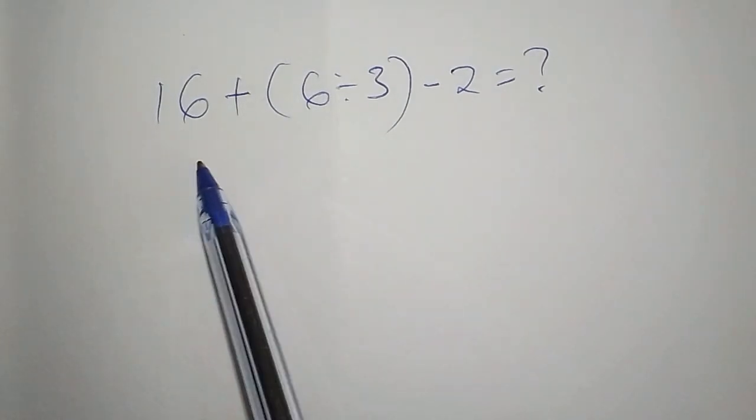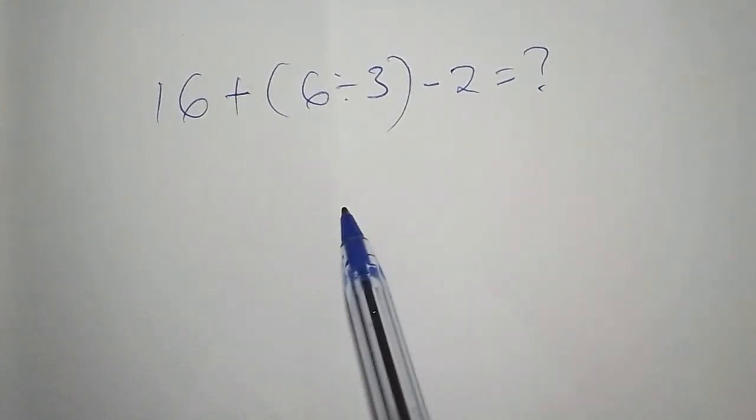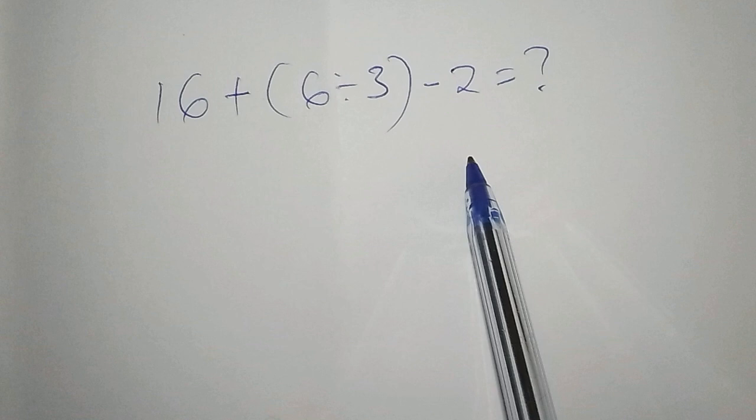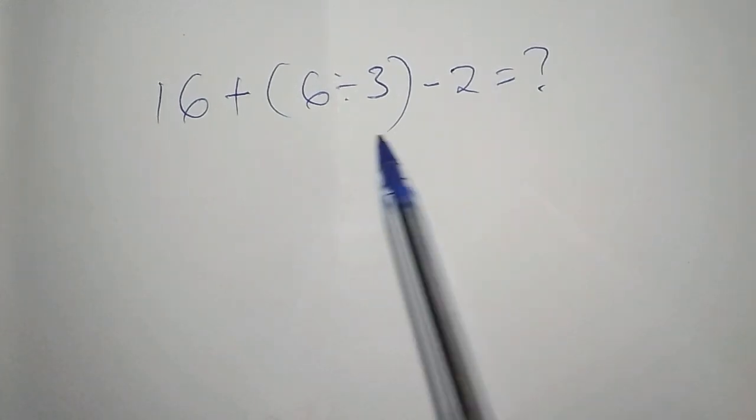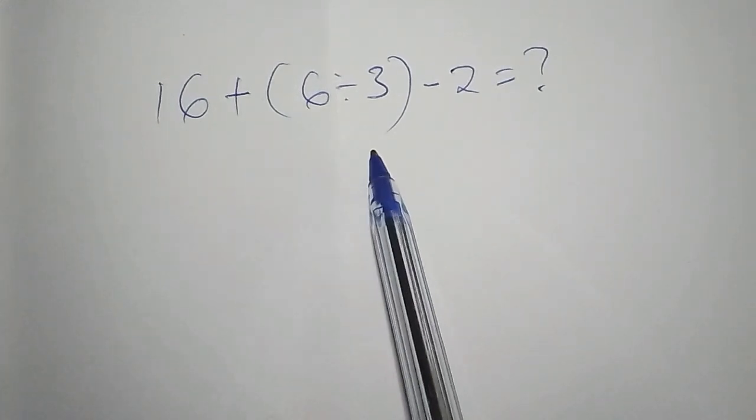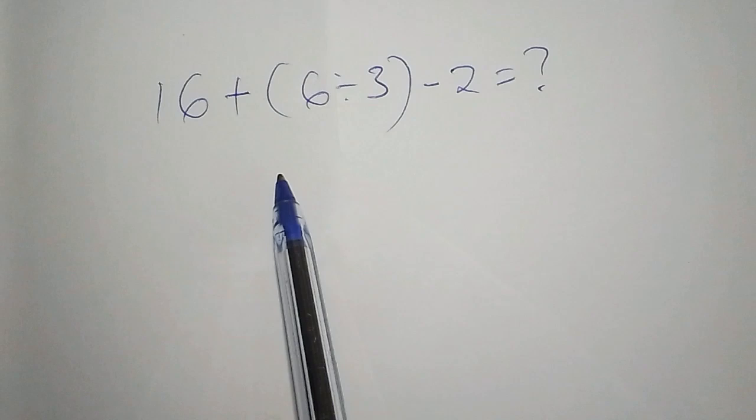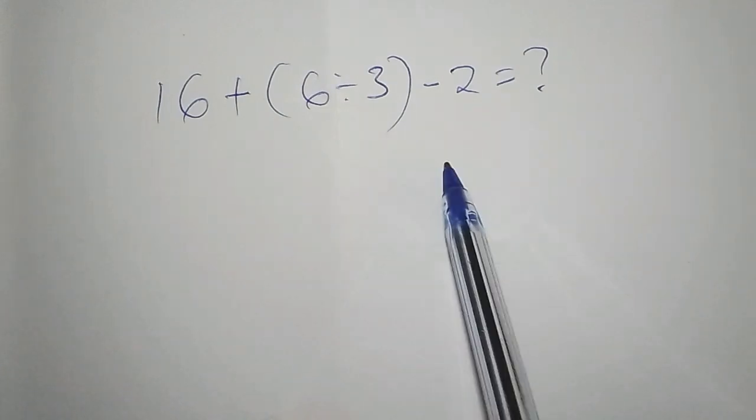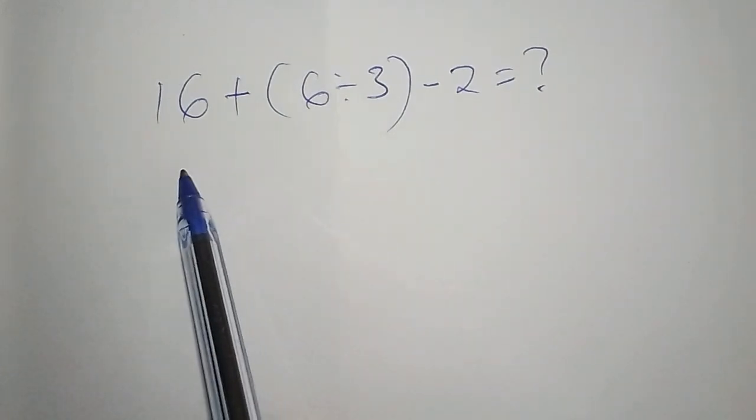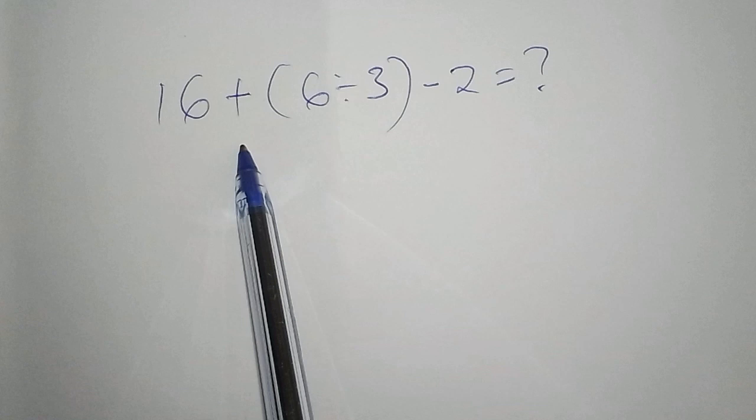Hello, this math problem might look simple but there's a mistake you can make that will mess up the entire solution. Before I proceed, I want to show you some of the common mistakes people make when working it out. It's one of the simplest problems. The problem is 16 + (6 ÷ 3) - 2.